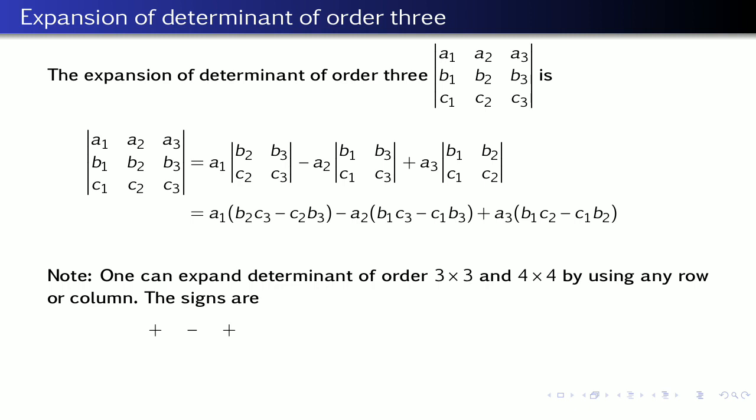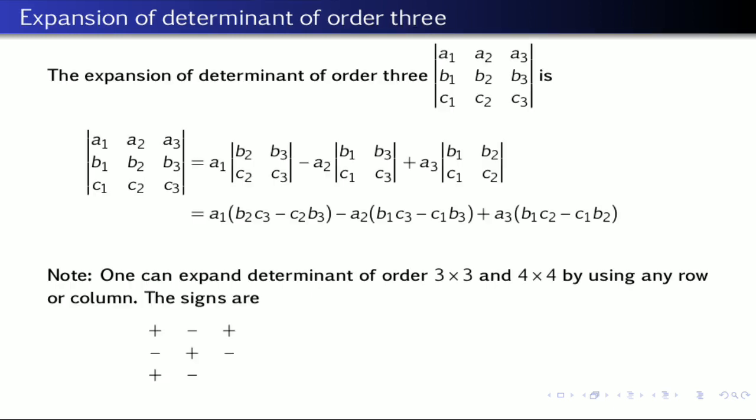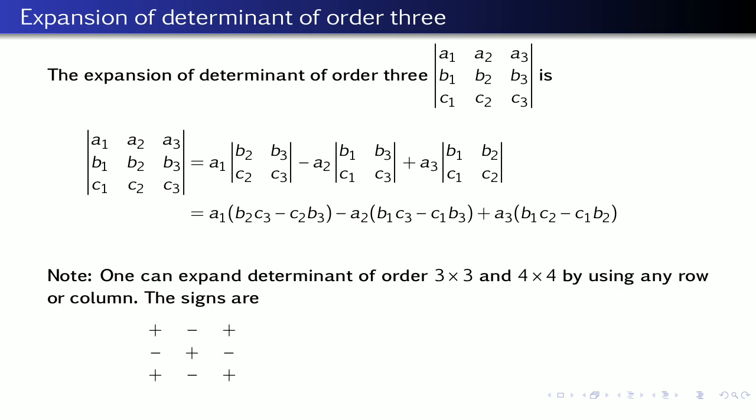In the second column, the first sign is minus, so the signs are minus, plus, minus. In the third column, the first sign is plus, so the signs are plus, minus, plus. These are the signs for a 3×3 determinant.